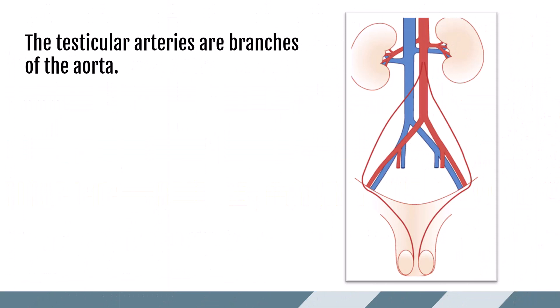The testicular arteries are branches off of the aorta. They arise inferior to the renal arteries and come off more the anterior portion. They extend through the retroperitoneum, into the inguinal canal, and then through the spermatic cord to the testicle.